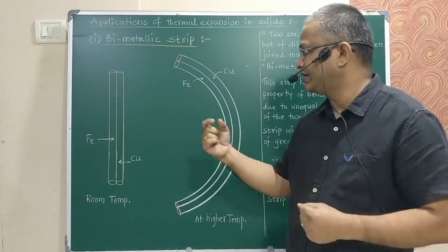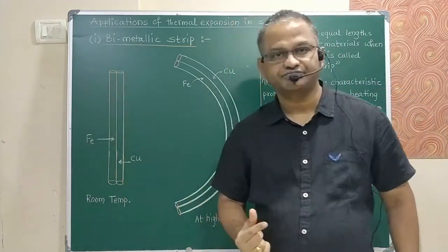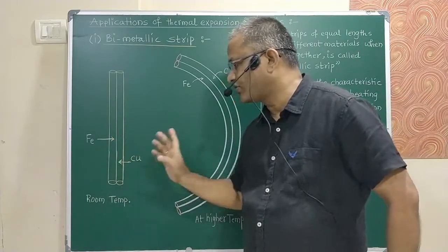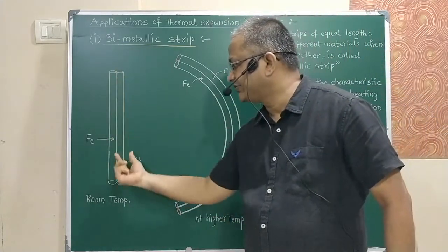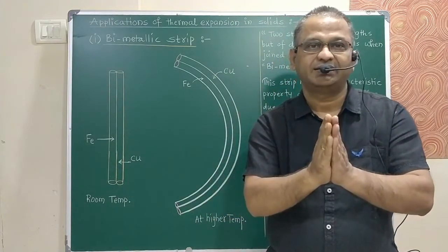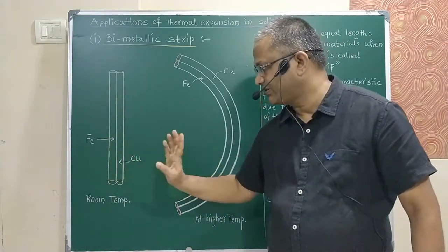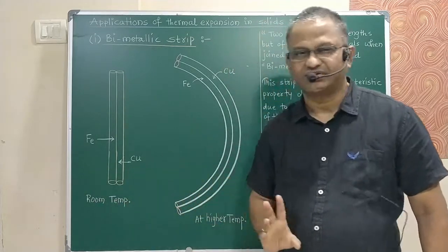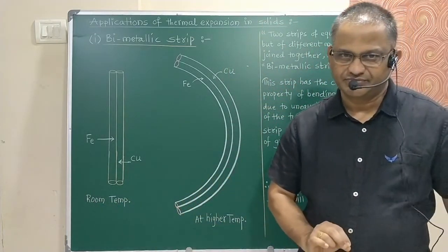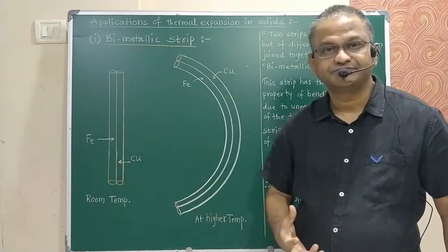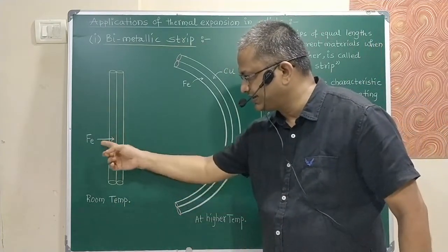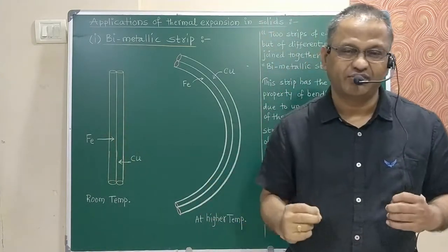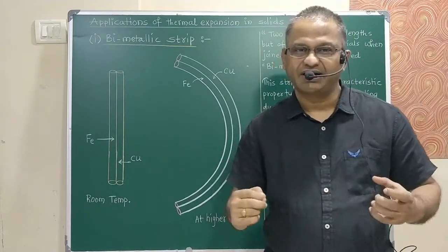For example, here is a bimetallic strip made of two different metals — iron and copper. This strip is shown at room temperature, which is the normal temperature. When we heat the strip, there will be expansion of both metals. But the expansion of iron and copper is not equal because their coefficients of linear expansion (alpha) are different.